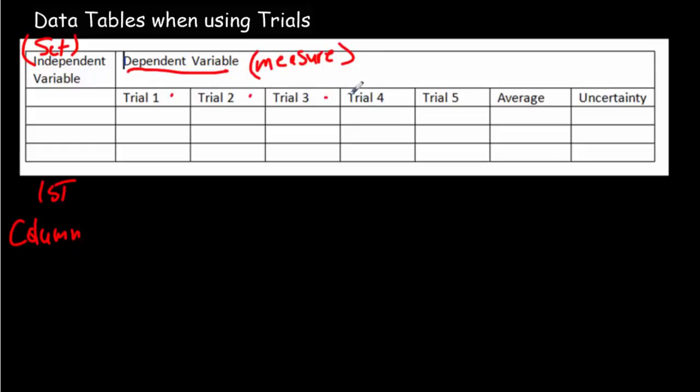Its different trial values will go in columns going across the page. So then you can find the average of those trial values, and that would go in this box. And then you'd use max minus min over 2 from those trials and use that to generate an uncertainty.